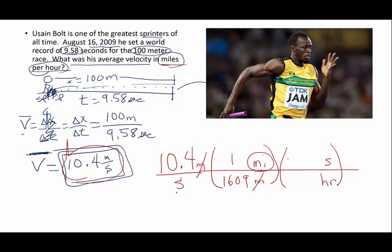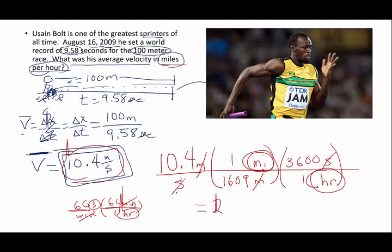Now how many seconds are in an hour? 3600. How do I know that? Well I know that because there are 60 seconds per minute and then there are 60 minutes per hour. So if I want to go directly from seconds to hours, 60 times 60 is 3600. So when I cross seconds out, I've got miles on the top, hours on the bottom. Then I pick up my calculator and do the math. I end up with 23.3 miles per hour. And that is his average velocity.